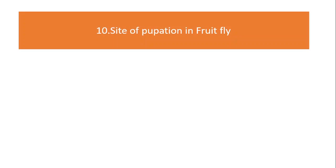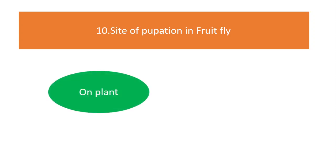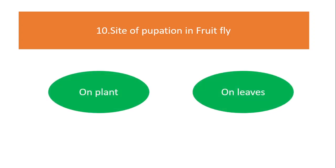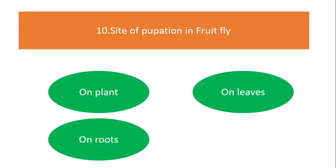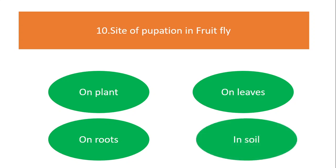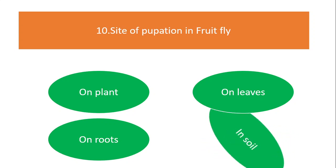Site of pupation in fruit flies: on plant, on leaves, on roots, or in soil? The answer is in soil.